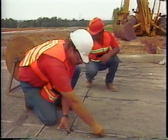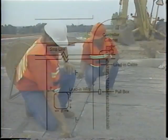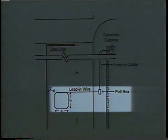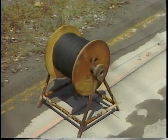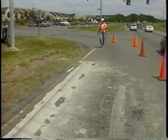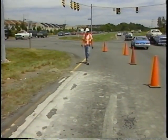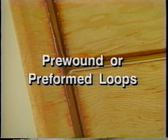Wire insertion is the next loop detector installation step. The loop must be one continuous wire from the pull box, through the curb, around the slot the correct number of turns, and back to the pull box. Check the supply reel to make sure there is enough wire before beginning, as it is very easy to lose count of the number of turns—particularly with four or more turns. Pre-wound or pre-formed loops can eliminate this possible confusion.